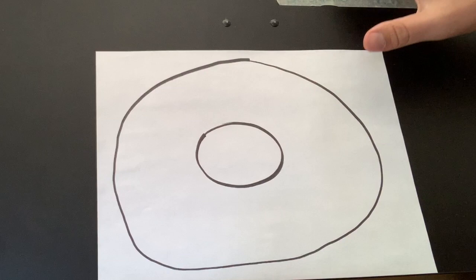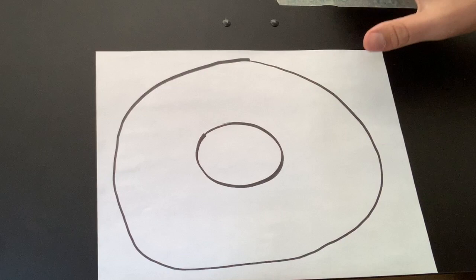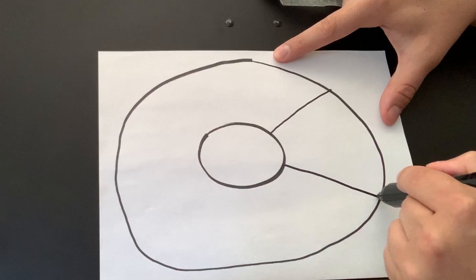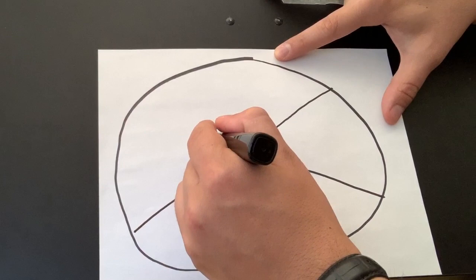The next thing I'm going to do is I'm going to start to draw some lines that connect the inside circle to the outside circle. And I'm going to draw six, so that's one, two, three, four, five, and six. There we go. And it's okay if some of them are bigger than others.